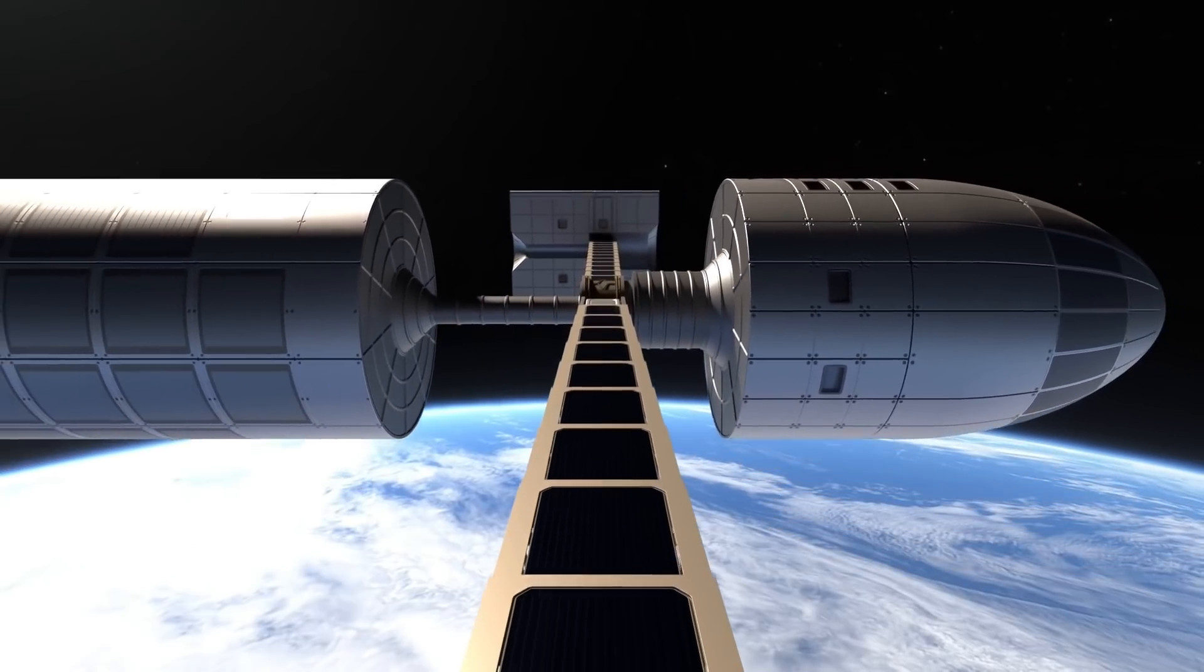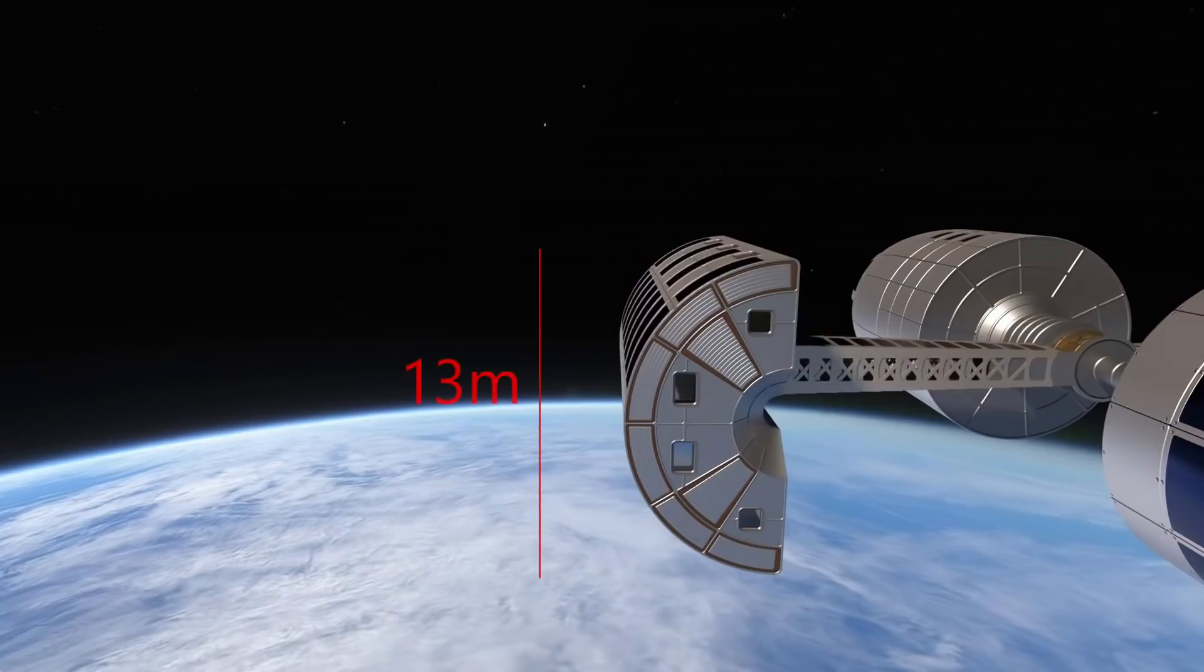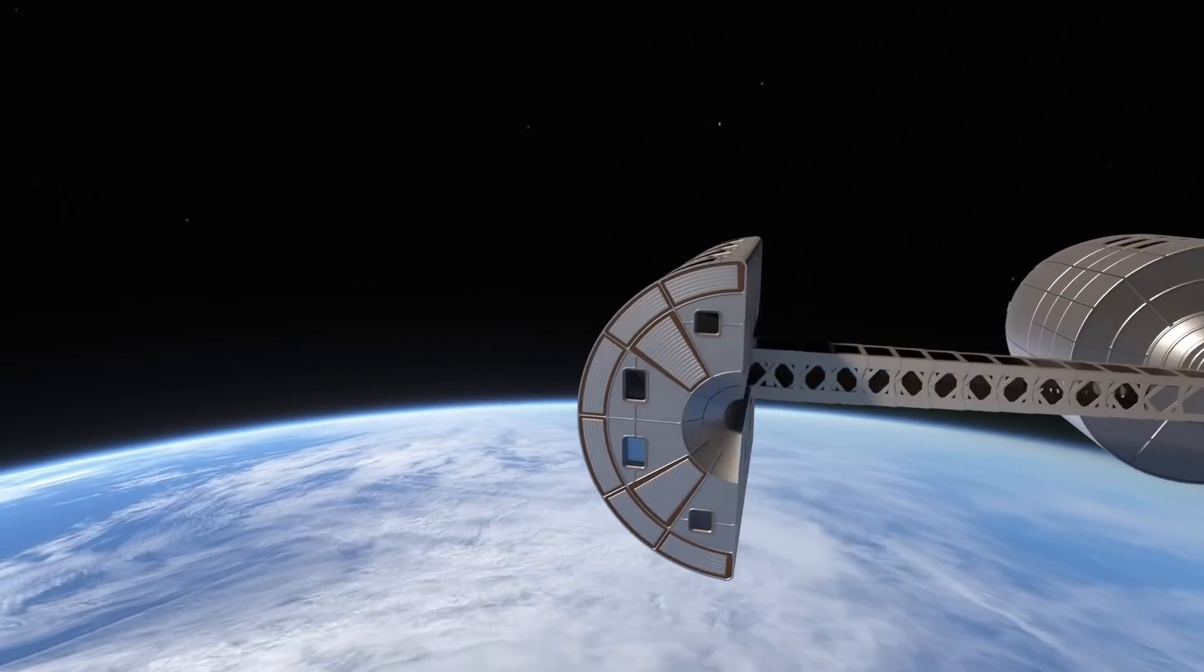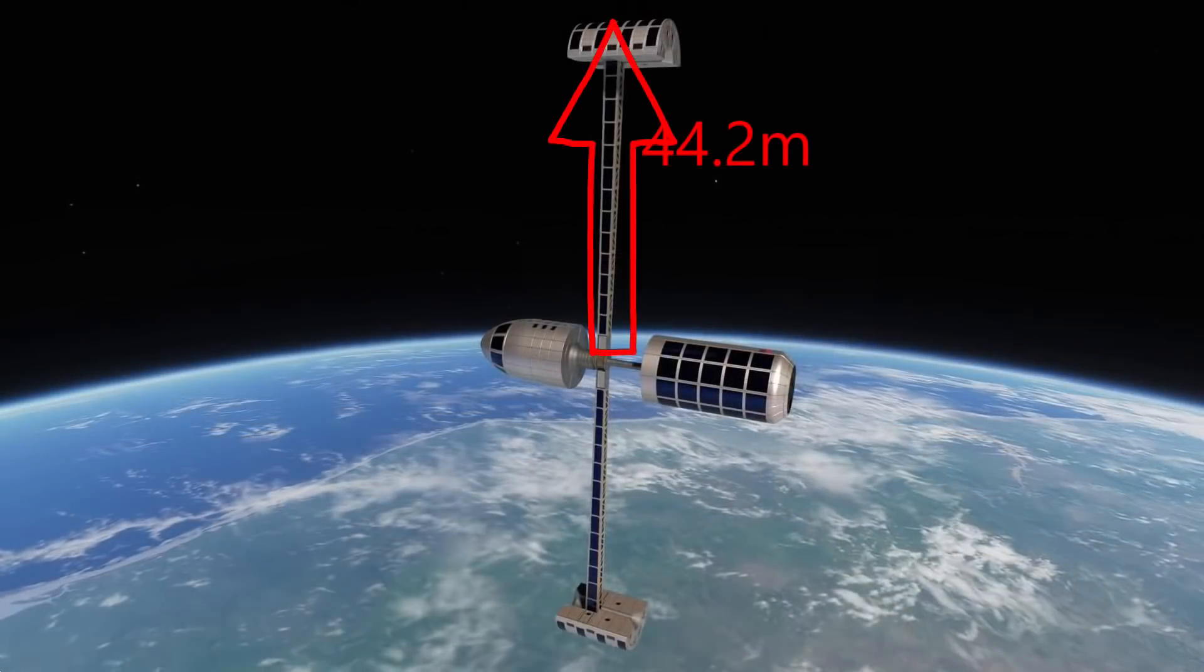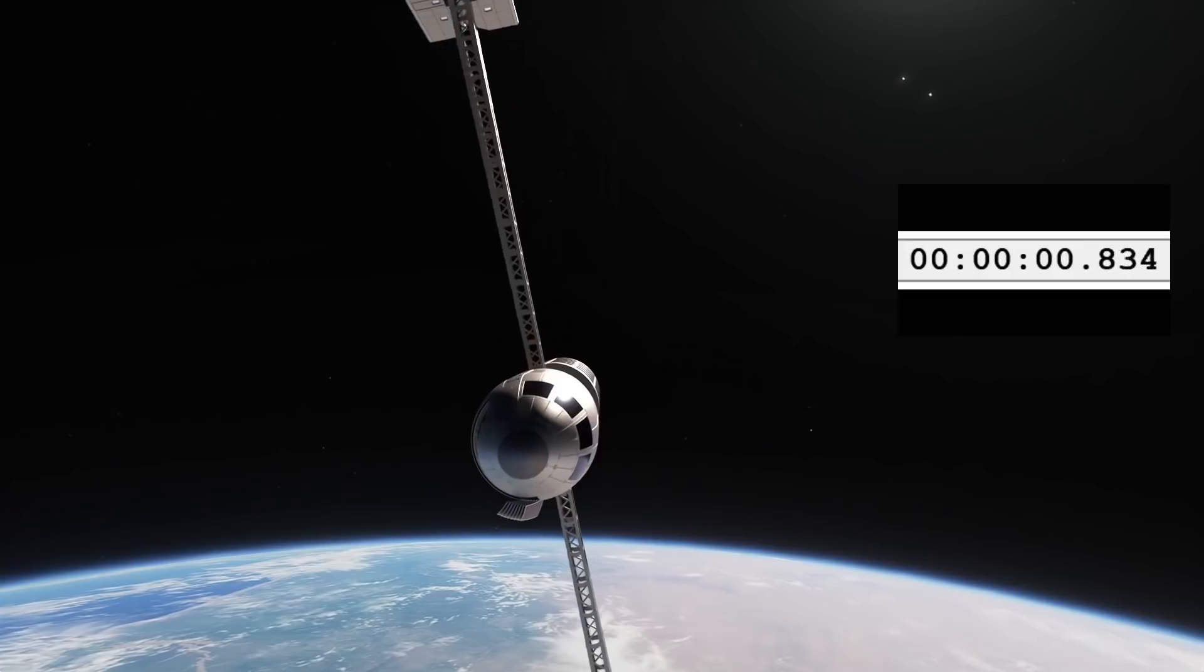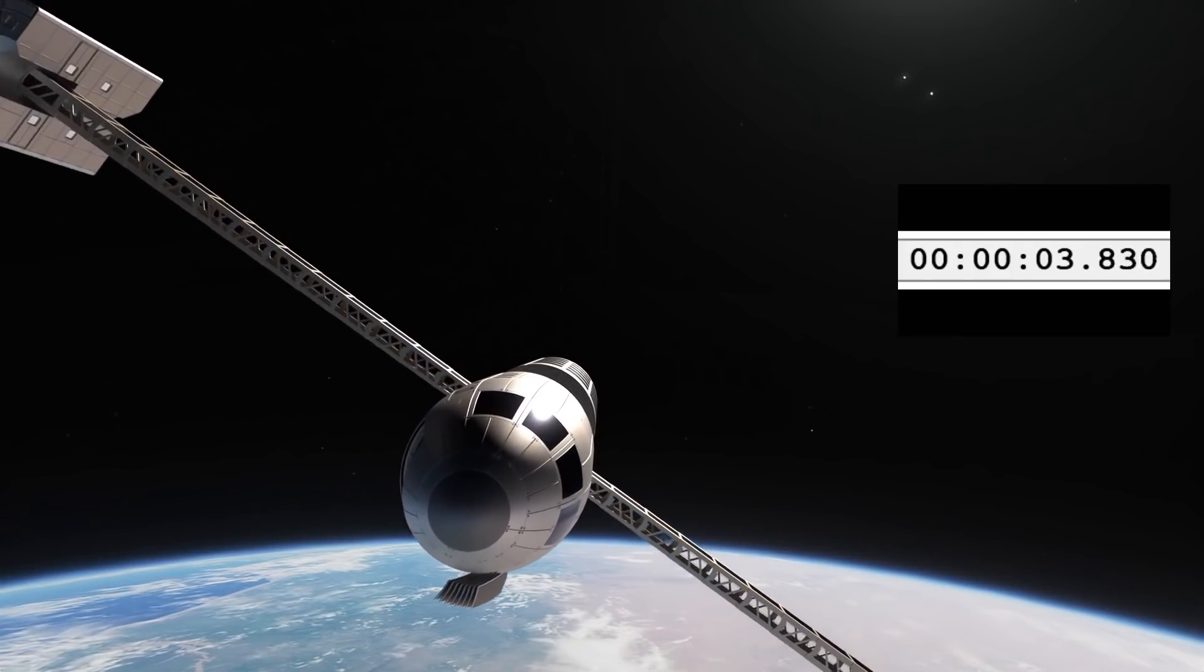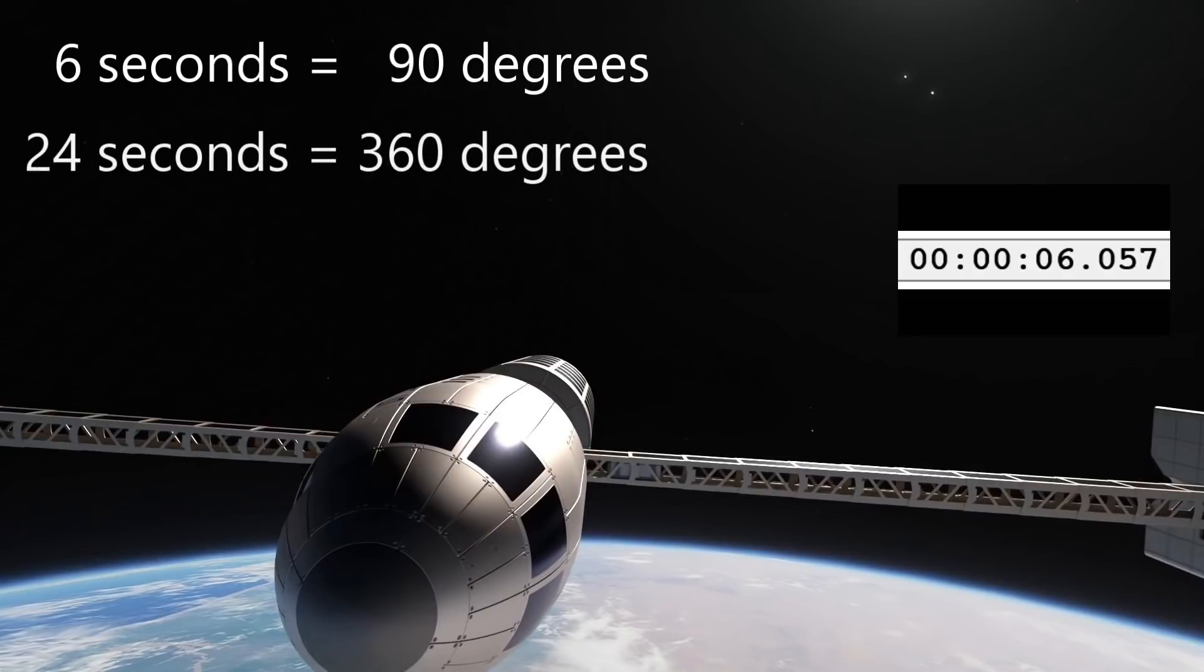Now let's do a little math. This ship is 13 meters in diameter, giving each of these habitation modules a diameter of about 6.5 meters. If we use this standard to calculate the length of the support columns, we get a length of 44.2 meters. Now we need to see how fast it is spinning. It looks to me like it took about 6 seconds to go 90 degrees. This would mean 24 seconds to do a full 360 degrees, which would be about 2.5 rpm.